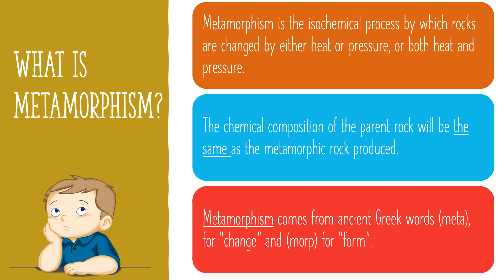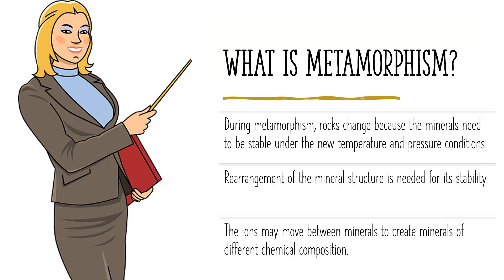Metamorphism comes from ancient Greek words: meta, which means change, and morph, which means form. During metamorphism, rocks change because the minerals need to be stable under the new temperature and pressure conditions. Rearrangement of the mineral structure is needed for its stability. The ions may move between minerals to create minerals of different chemical composition.